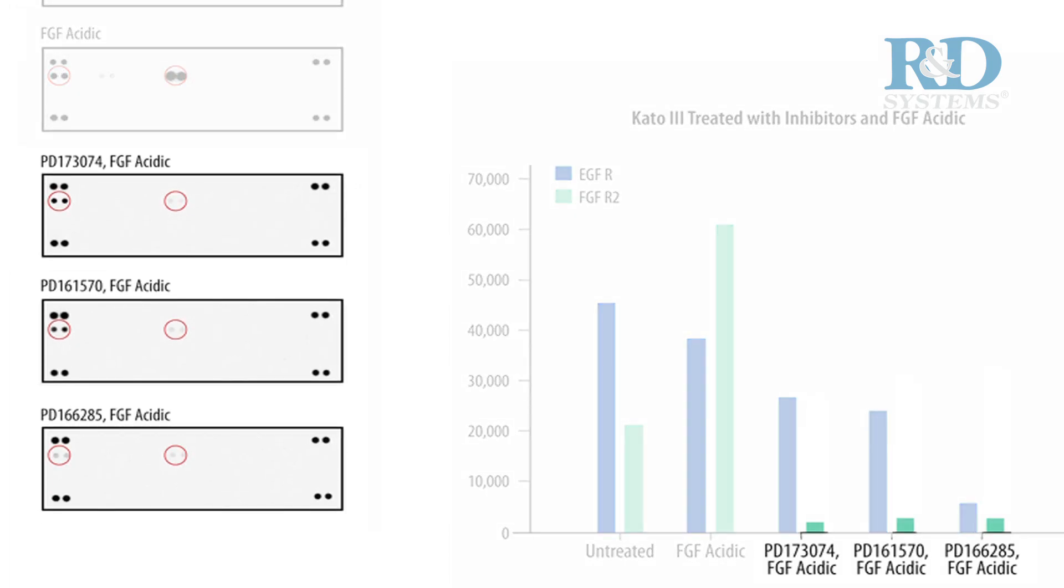Incubating the cells with inhibitors resulted in decreased FGFR2 and EGFR phosphorylation.